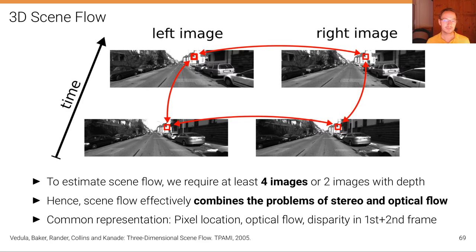Or we require two images, an image at time t and an image at time t plus one, that comprise not only RGB information, but also depth information. So if we have an RGBD sensor directly, then we don't need to include the stereo estimation problem.